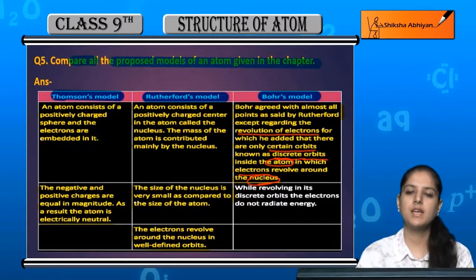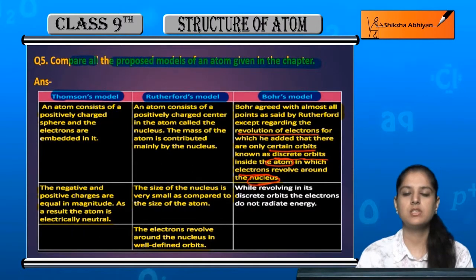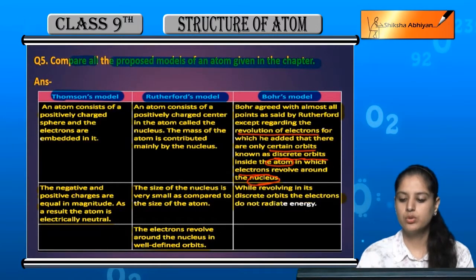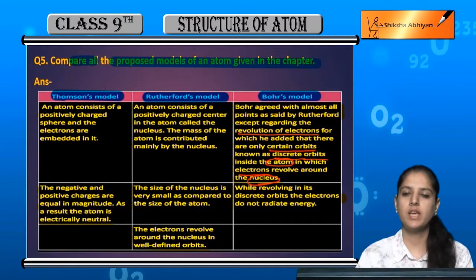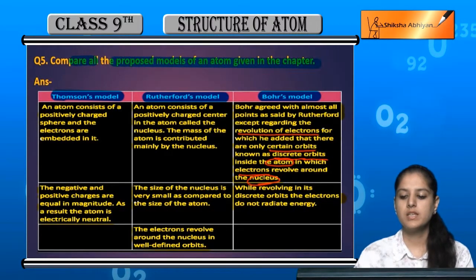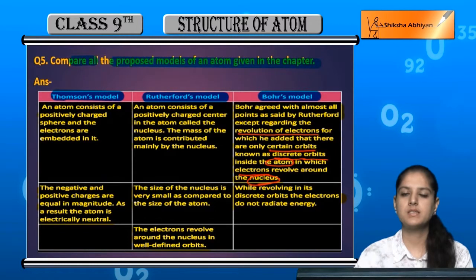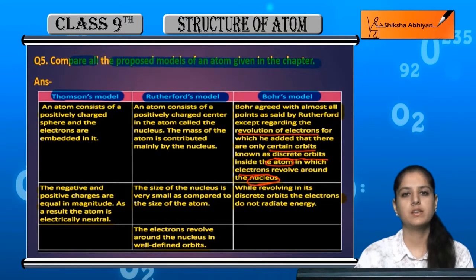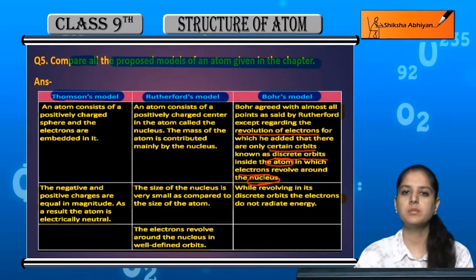And while revolving in their discrete orbits, the electrons do not radiate energy. He also said that when electrons revolve in their discrete orbits, they do not radiate energy, which is why the atom is stable.